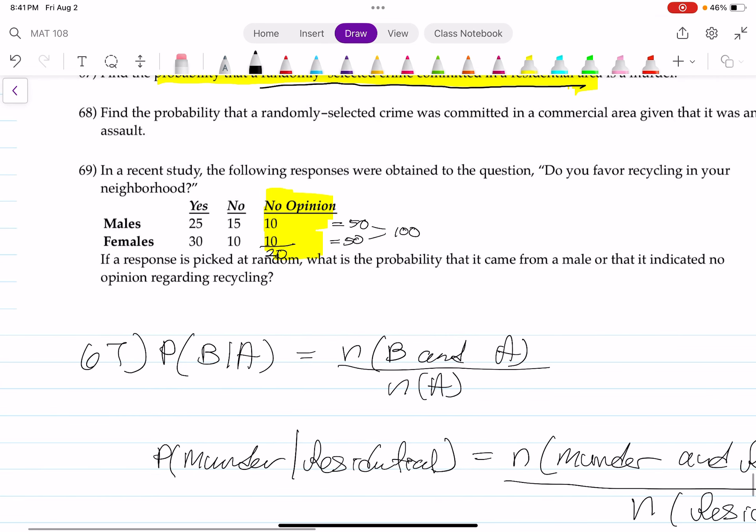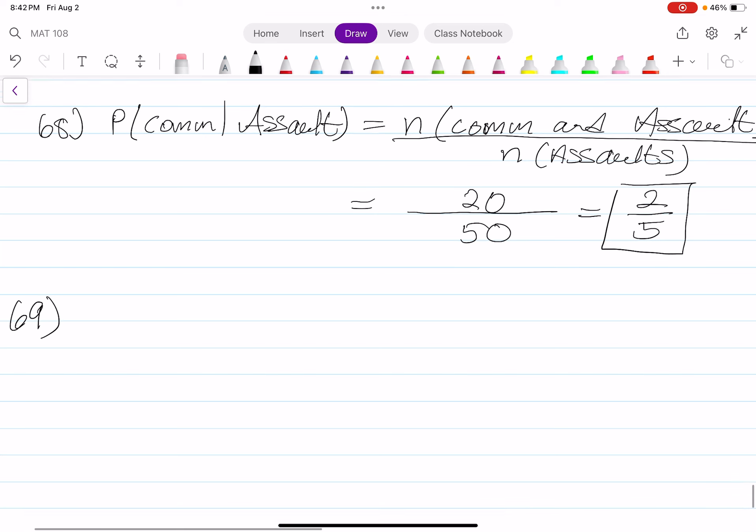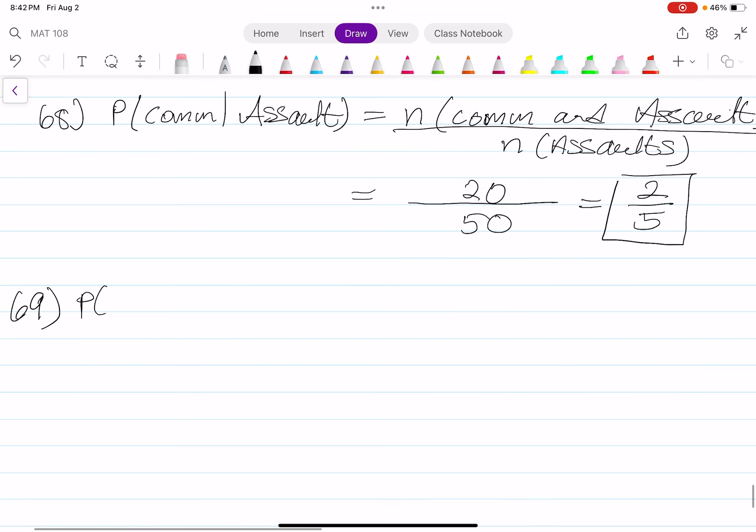Out of 100 voters, either male or female, that indicated no opinion regarding recycling, that equals to 20. So that means the probability of no opinion is 20 out of 100, which can reduce to two-tenths, which is reduced to one-fifth.